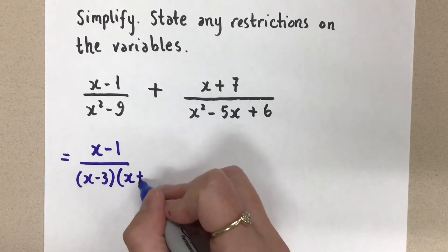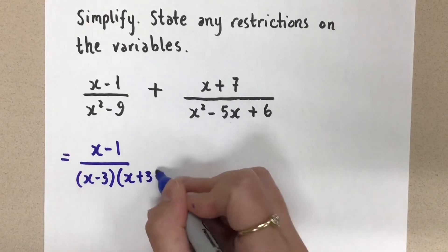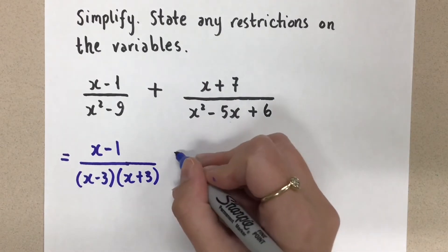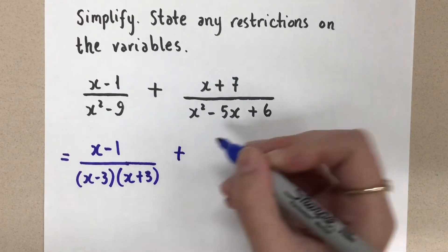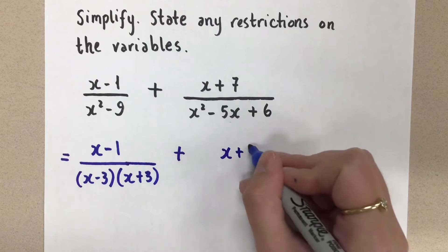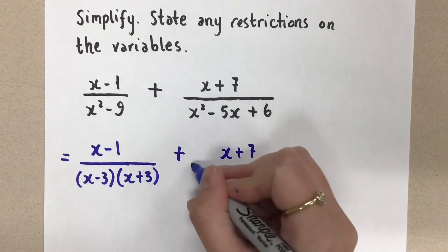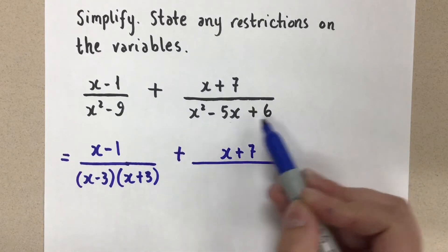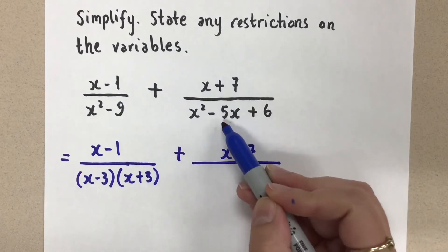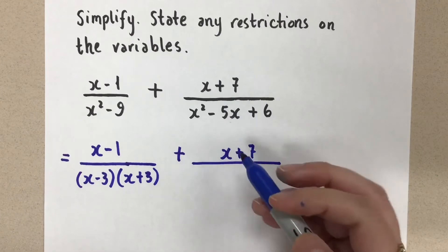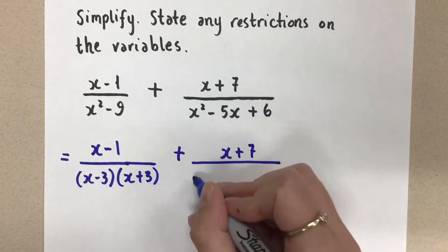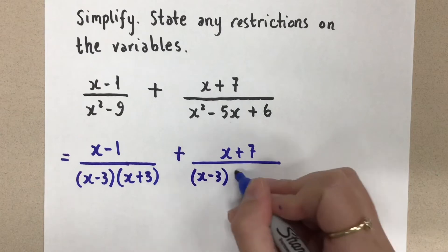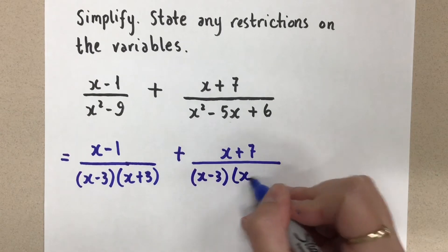So difference of squares, we've got x minus three, x plus three, plus the x plus seven in the numerator and in the denominator. If our product was six and our sum was negative five, those numbers are going to be negative three and negative two. So x minus three and x minus two.